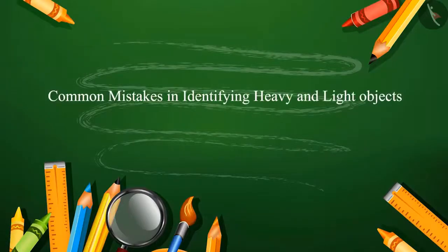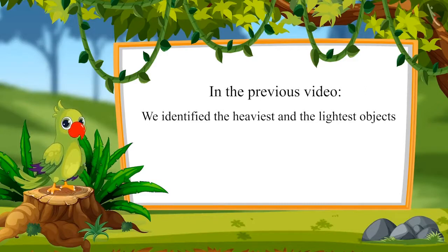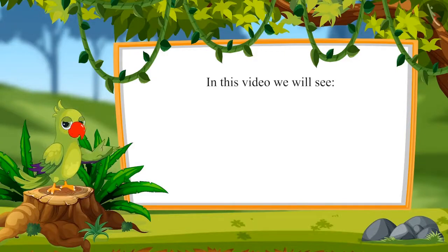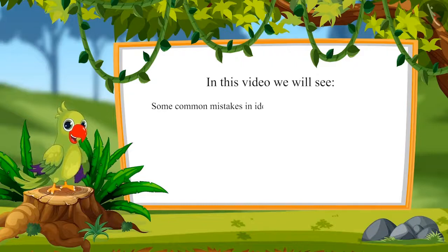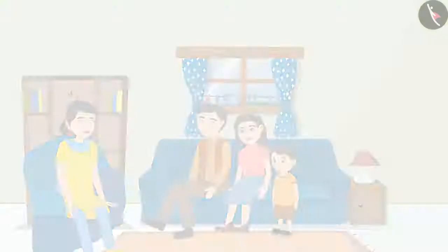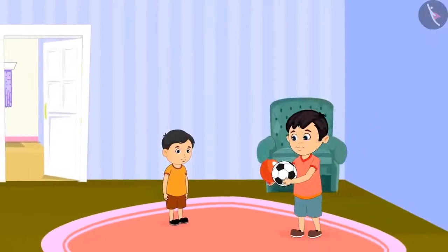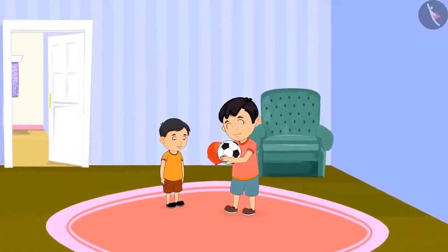Common mistakes in identifying heavy and light objects. Today, Chotu's uncle and aunt have come to his house along with their little child Chinoo, with whom Chotu is going to have a lot of fun. Chotu brings a balloon and his ball to play with Chinoo.